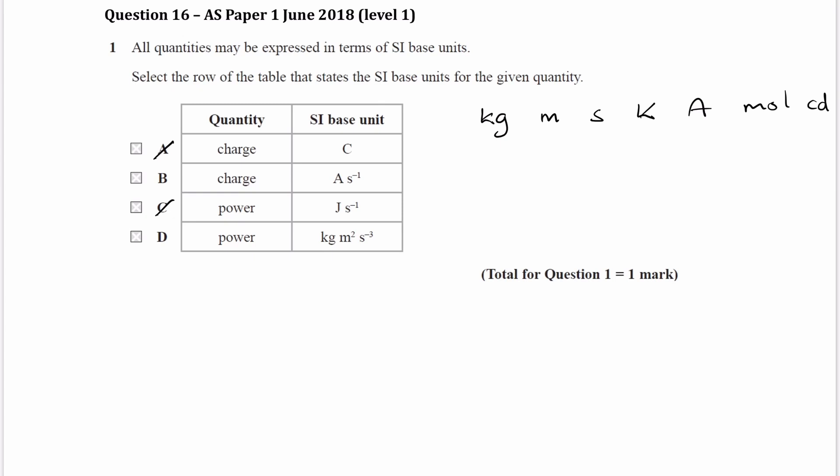Then we can think about the different equations for these two things. For charge, Q is equal to IT, and the SI base units for Q will therefore be amps multiplied by seconds. And then we can see that B is not correct.